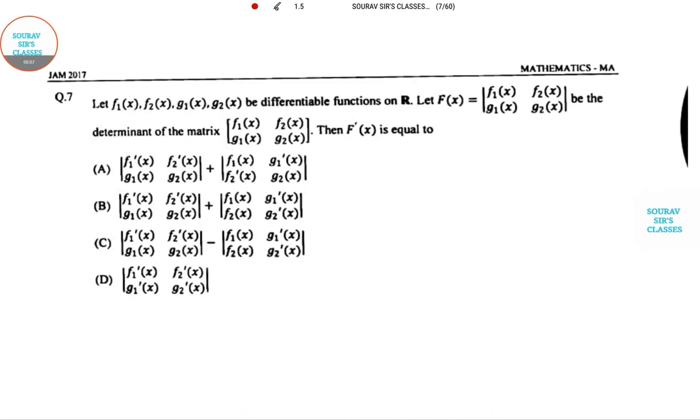I am solving from question 7. F1, F2, G1, G2 are differentiable functions on the real plane and F(x) is given, so a 2 by 2 matrix given by the determinant of the matrix.